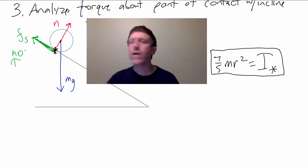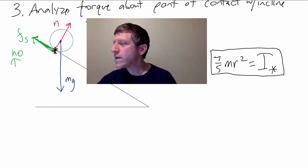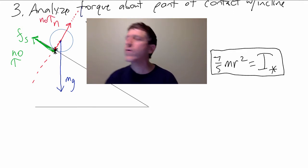No torque due to the force of static friction. How about the normal force? Well, let's look again at the line of action of this normal force. Notice it goes right through the axis of rotation. And R is zero, so no torque for this either, for the normal force.